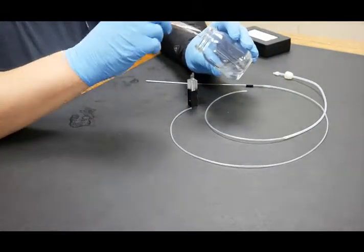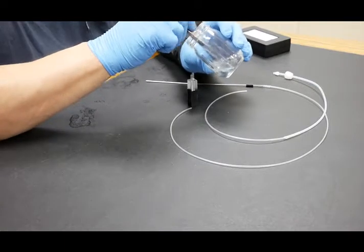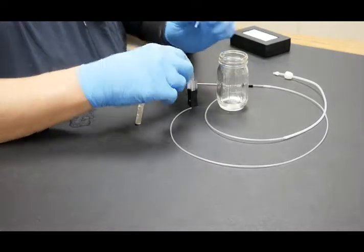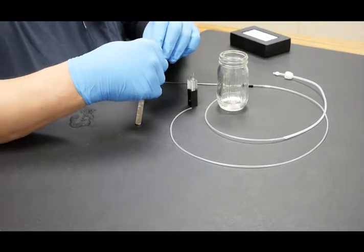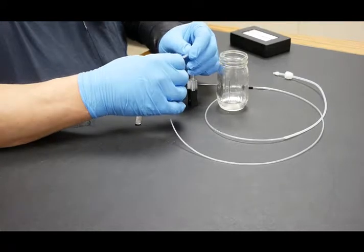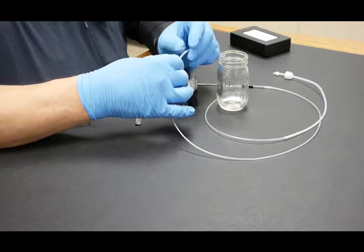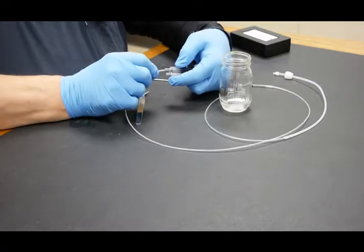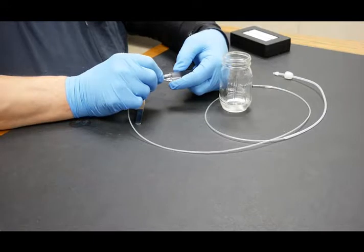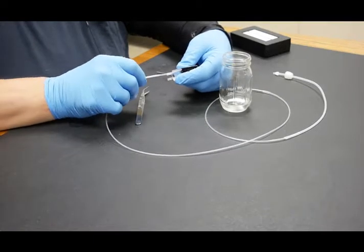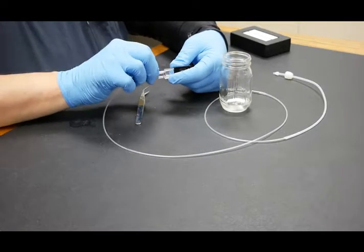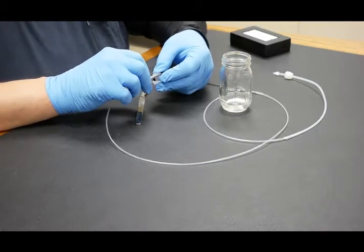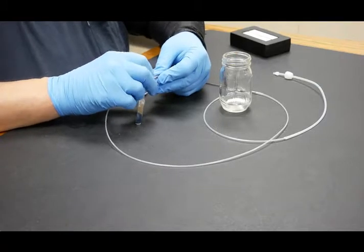Once we've identified that, we can extract a piece of our silastic tubing that's been soaking. This is the thinner wall silastic tubing that we use instead of the heavier wall. That slides over the probe tube. Then we insert the probe tube into the stem of the flow cell.